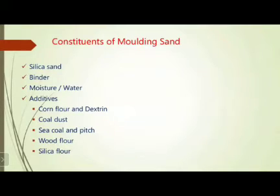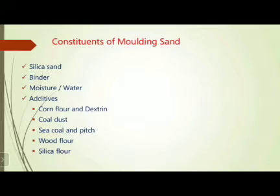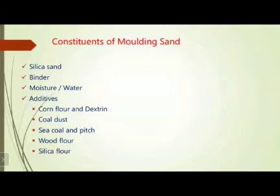Now coming to the constituents of molding sand — we can talk about furnace allowances, types of patterns, molding boxes, and molding sand additives and binders. The main constituents of molding sand are: one is silica sand, the second is binder, the third is moisture or water, and the fourth is additives — whose sub-classifications include corn flour and dextrin.